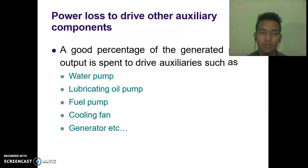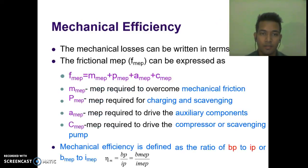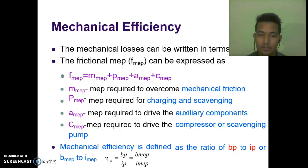Power loss to drive other auxiliary components: a good percentage of generated power output is spent to drive auxiliaries such as water pump, lubricating oil pump, fuel pump, cooling fan, generator, etc. For mechanical efficiency, the mechanical losses can be written in terms of MEP, where frictional MEP = MMEP + PMEP + AMEP + CMEP. Here MMEP is MEP required to overcome mechanical friction, PMEP is for charging and scavenging, AMEP is for driving auxiliary components, and CMEP is for driving the compressor or scavenging pump. Mechanical efficiency is defined as the ratio of BP to IP, or BMEP to IMEP.